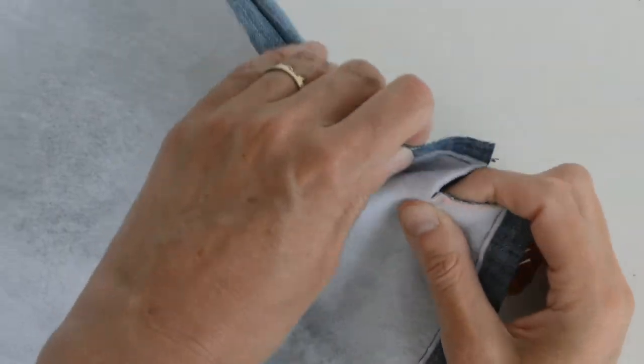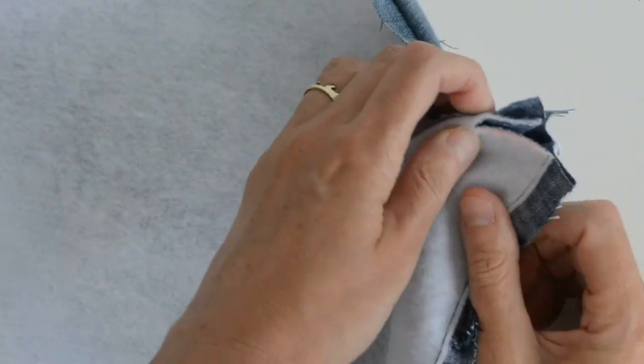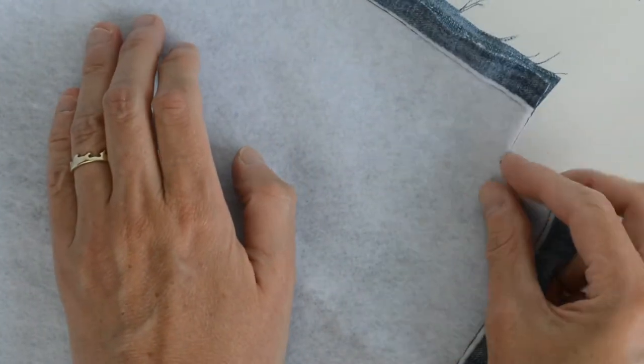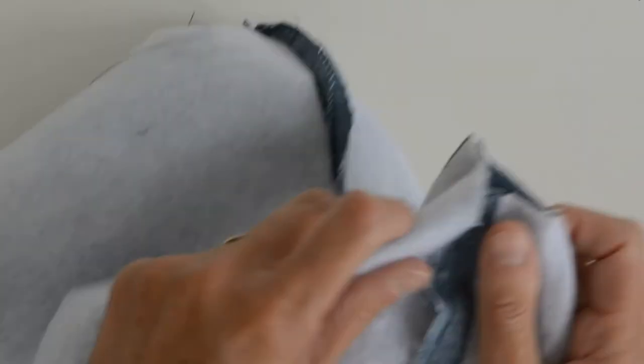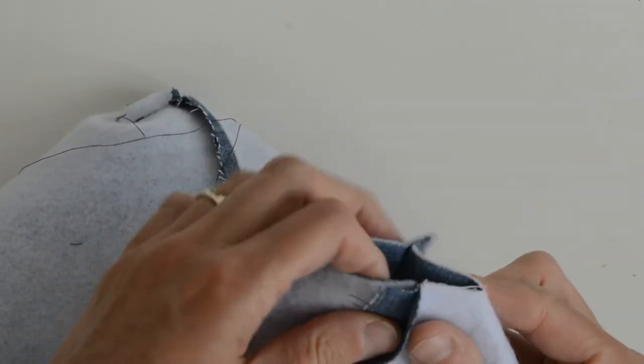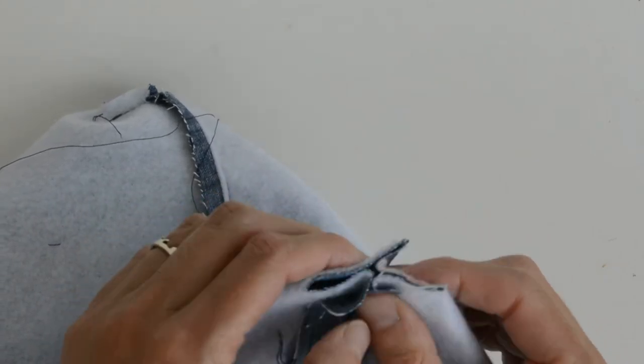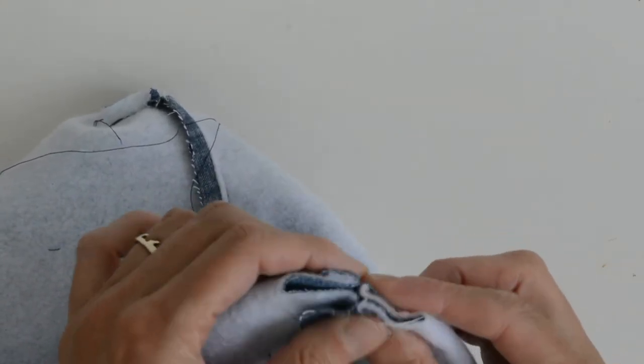I'm going to fold the two seams together again, just like we did on the other corner. And we're going to create a straight line from that corner, that square.